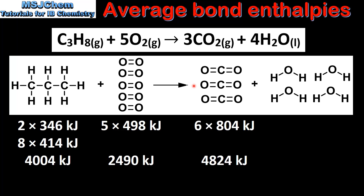Next we will move on to the products. In the balanced chemical equation we have 3 moles of carbon dioxide. One molecule of carbon dioxide is composed of 2 carbon-to-oxygen double bonds, which gives a total of 6 C=O double bonds. So we multiply the average bond enthalpy of the C=O double bond by 6, which gives 4824 kJ.